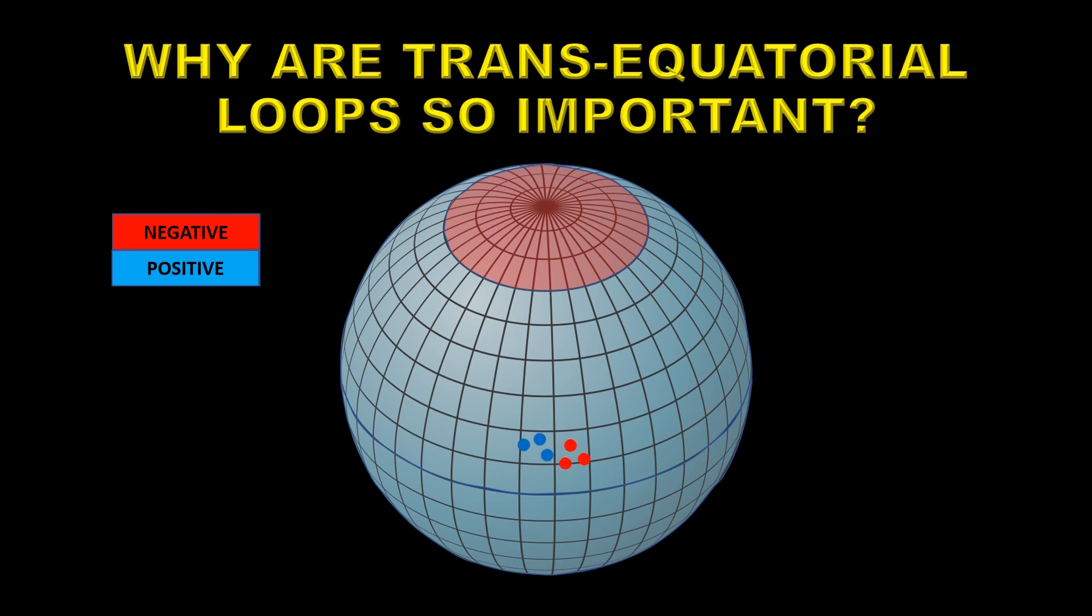So now let's put a sunspot region here in the northern hemisphere with negative leading and positive trailing. And then do the same in the southern hemisphere but of course reversed as they would be. But every now and then they interact across the equator like this. So say the leading spots start to cancel the magnetic field.